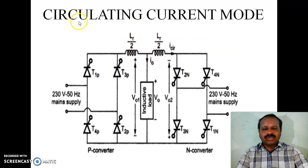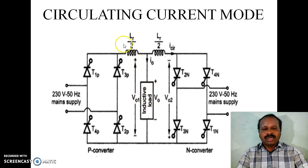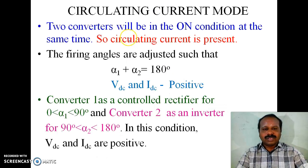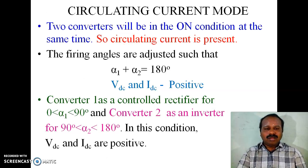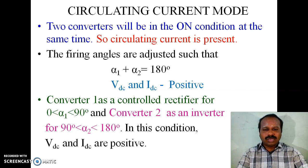This is the complete diagram showing circulating current mode. Converter 1 (positive converter) and Converter 2 (negative converter) are connected back-to-back to the common load. Lr/2 inductors on both sides are used to limit the circulating current — this is known as a reactor. In circulating current mode, both converters are in the on condition at the same time, so circulating current is present. The firing angles are adjusted such that alpha 1 plus alpha 2 equals 180°.